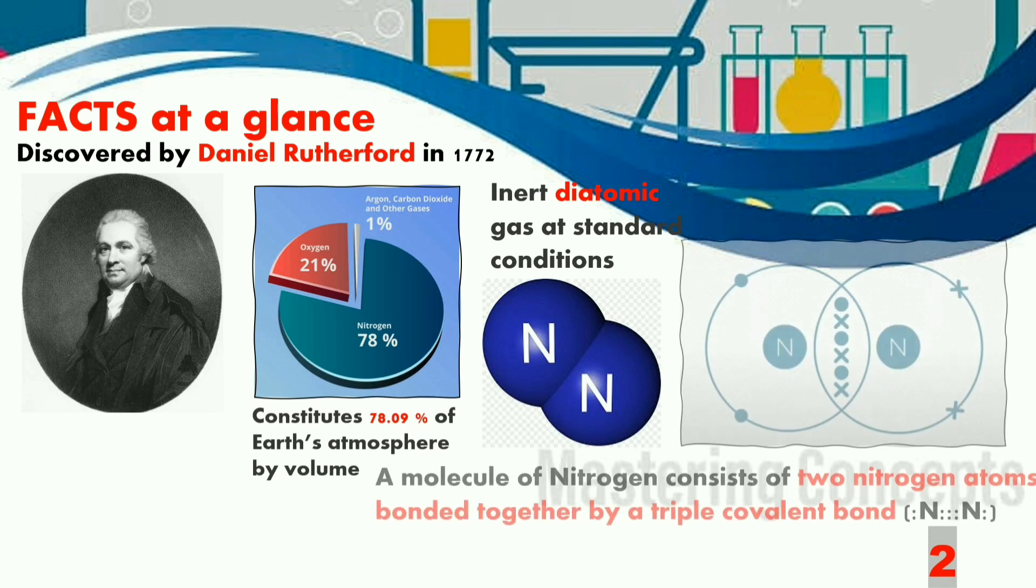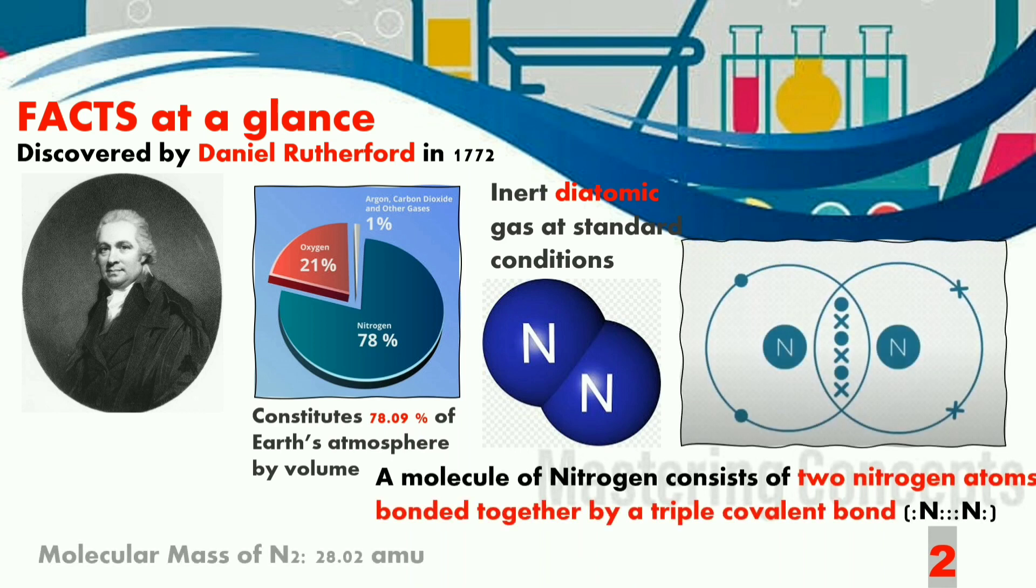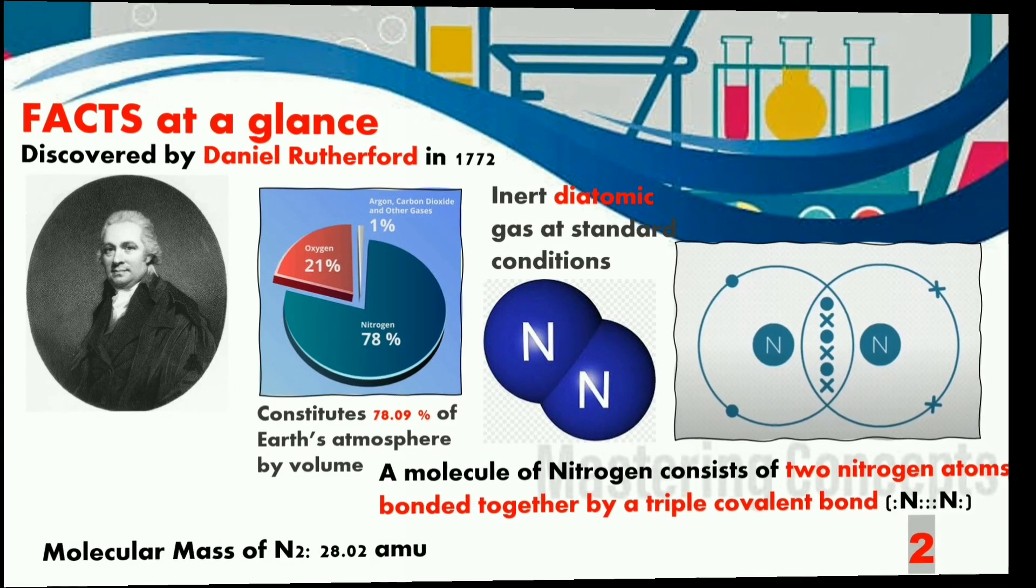Nitrogen gas is an inert diatomic gas at standard conditions, that means it is made up of two atoms of nitrogen. The two atoms are bonded together by a triple covalent bond. Also remember the molecular mass of nitrogen is 28.08 amu.